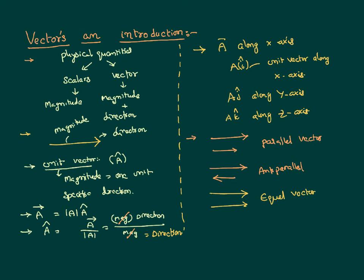Consider one vector having a certain magnitude and a specific direction, and a second vector having the same magnitude but the opposite direction. If the first vector is shown as a-bar, the second vector is shown as minus a-bar, indicating that the two vectors are equal in magnitude but opposite to each other. This is called a negative vector. The first vector is the negative vector of the second, and the second is the negative vector of the first. So a negative vector is a vector whose magnitude is the same but whose direction is opposite.